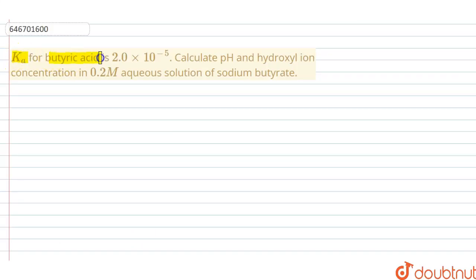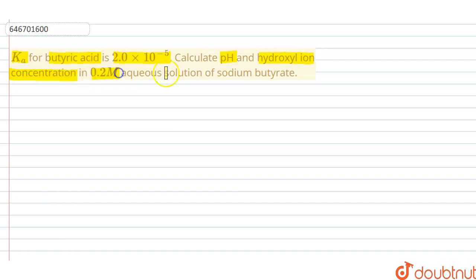Hello students. The question is: Ka for butyric acid is 2.0 × 10⁻⁵. Calculate the pH and hydroxyl ion concentration in a 0.2 molar aqueous solution of sodium butyrate.